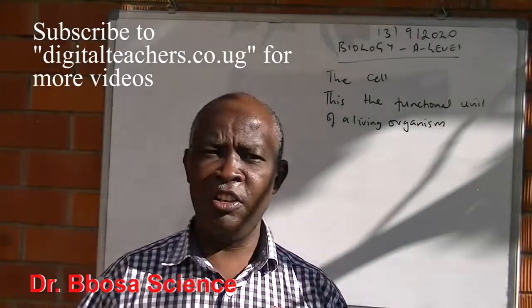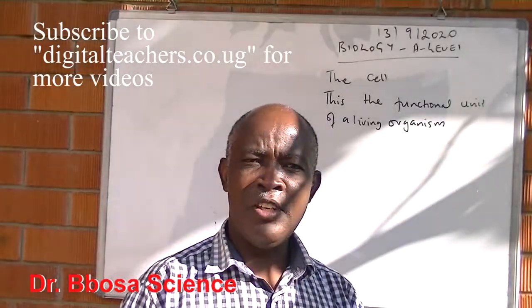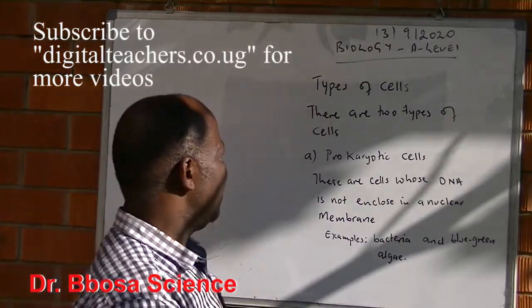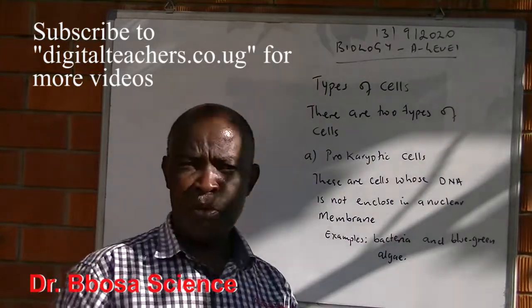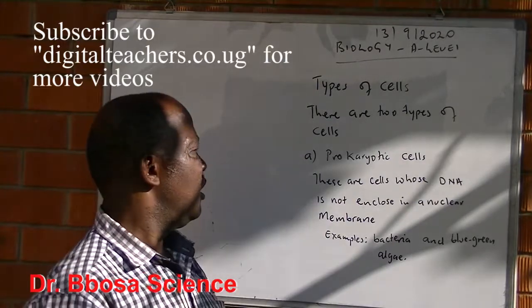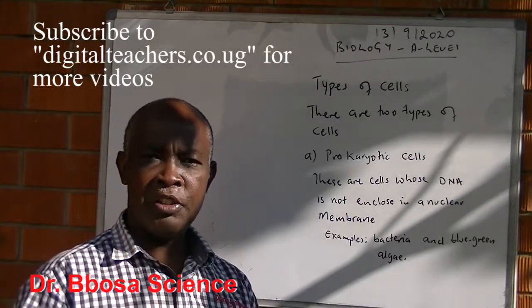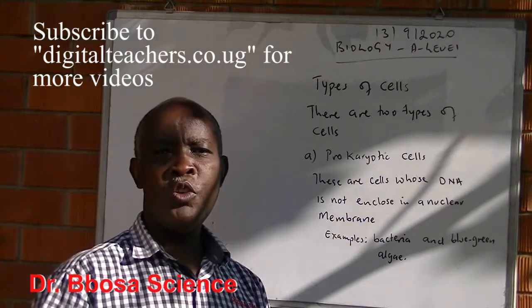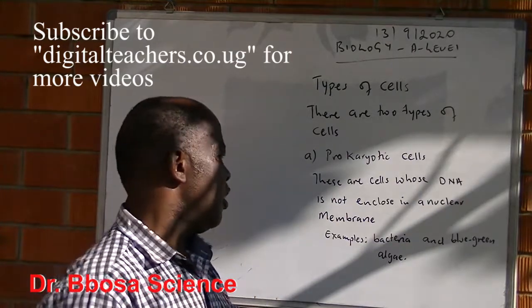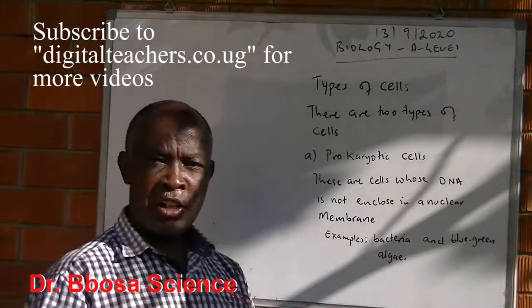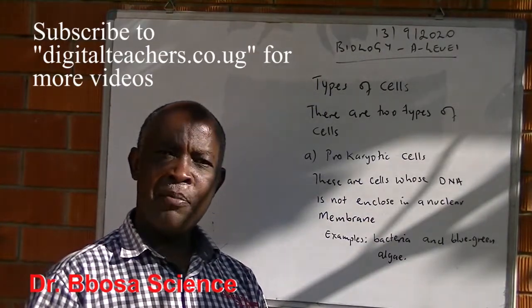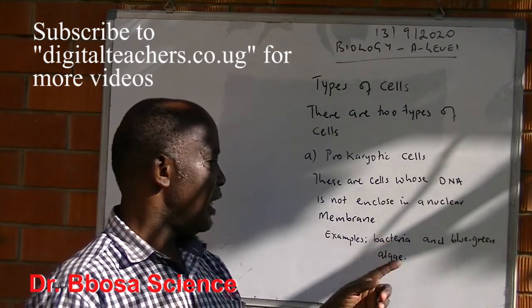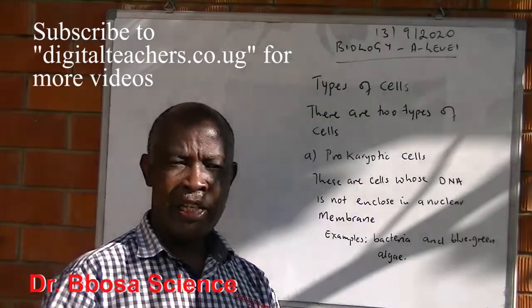The cell is the functional unit of a living organism. Types of cells: there are two types of cells. A: Prokaryotic cells. Prokaryotic cells are cells whose DNA is not enclosed in a nuclear membrane. Examples of prokaryotic cells include bacteria and blue-green alga.